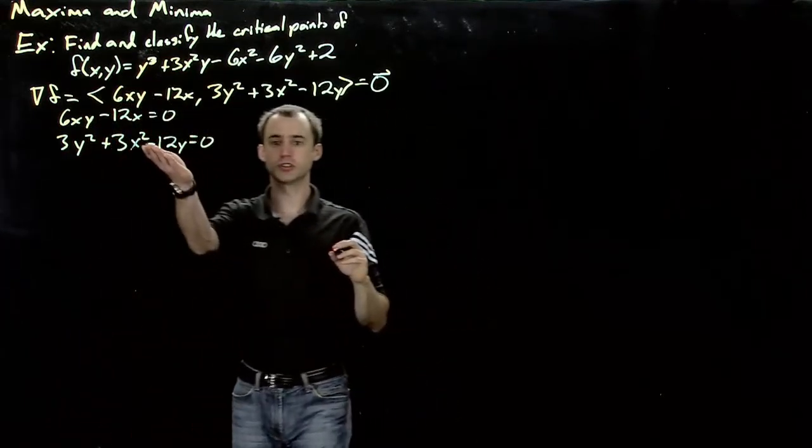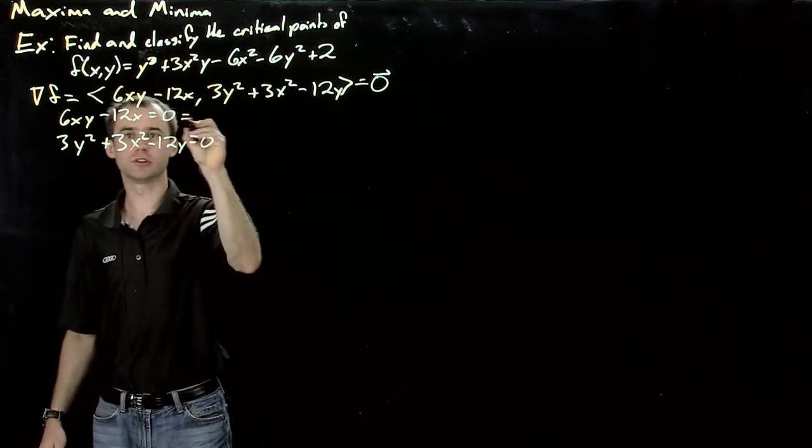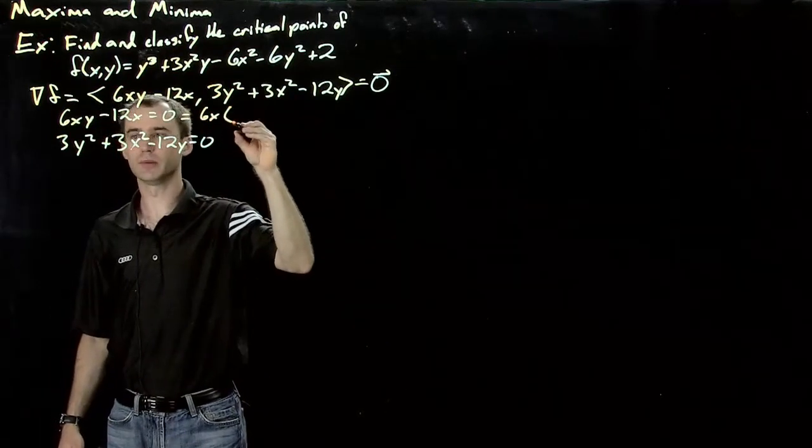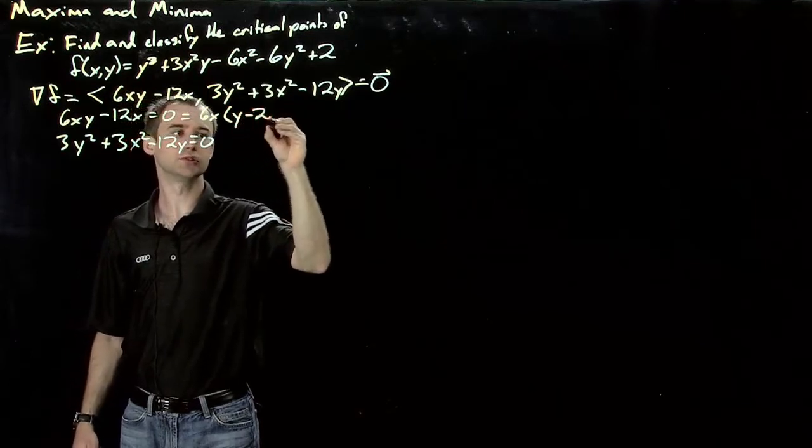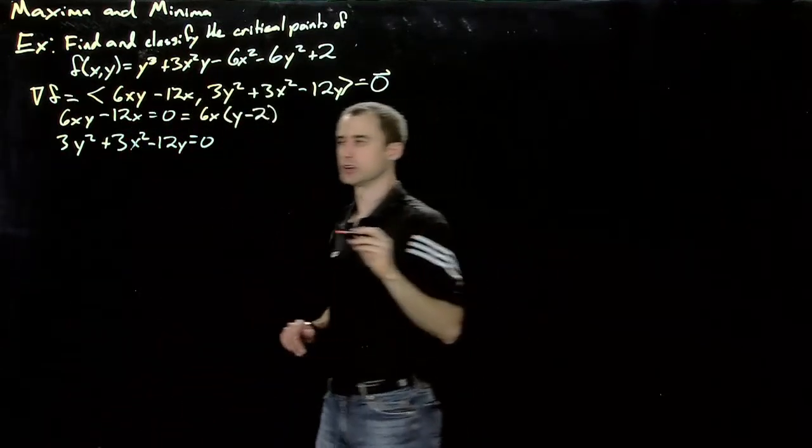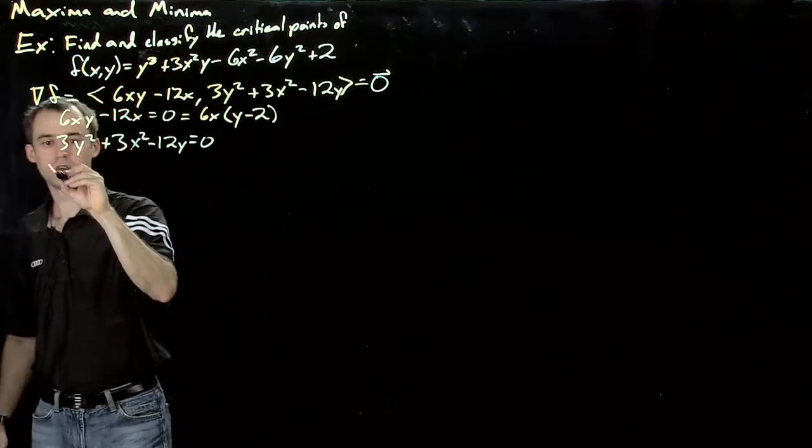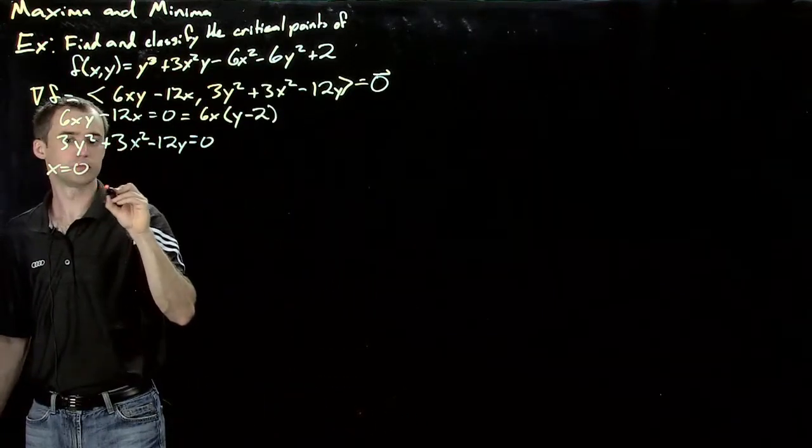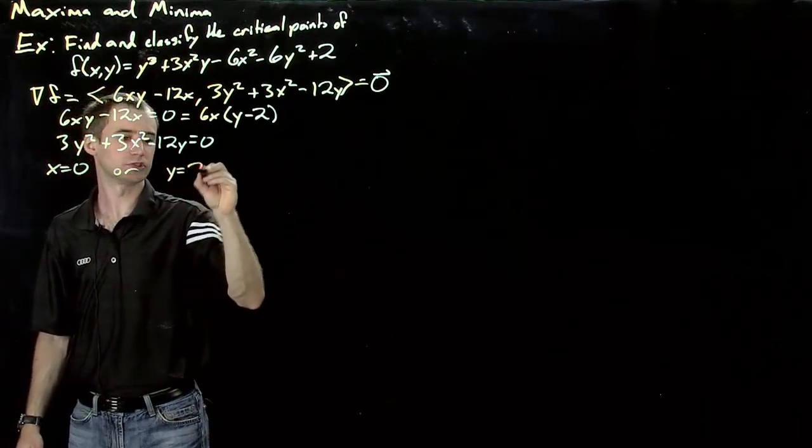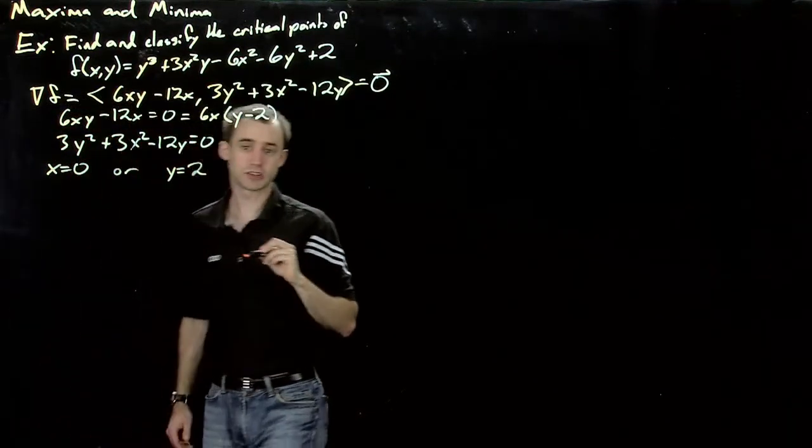Well, let's look at this first equation here. I can factor a 6x out. So 6x times y minus 2. So this implies that either x equals 0 or y equals 2. Now let's take this case by case.